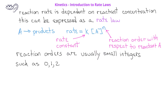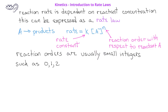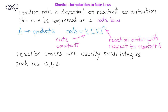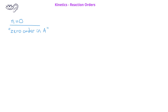Reaction orders are usually small integer values such as 0, 1, or 2. When we have a reaction order with a value of 0, we say that the reaction is zero order with respect to the reactant A. In these situations, the rate is independent of the concentration of A, and therefore the rate will remain constant even if the concentration of A changes.